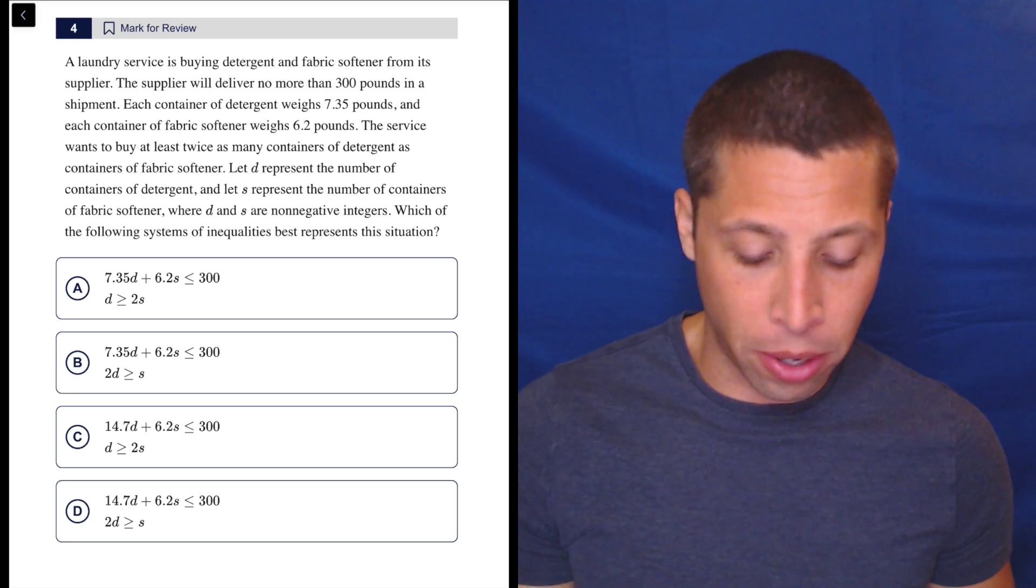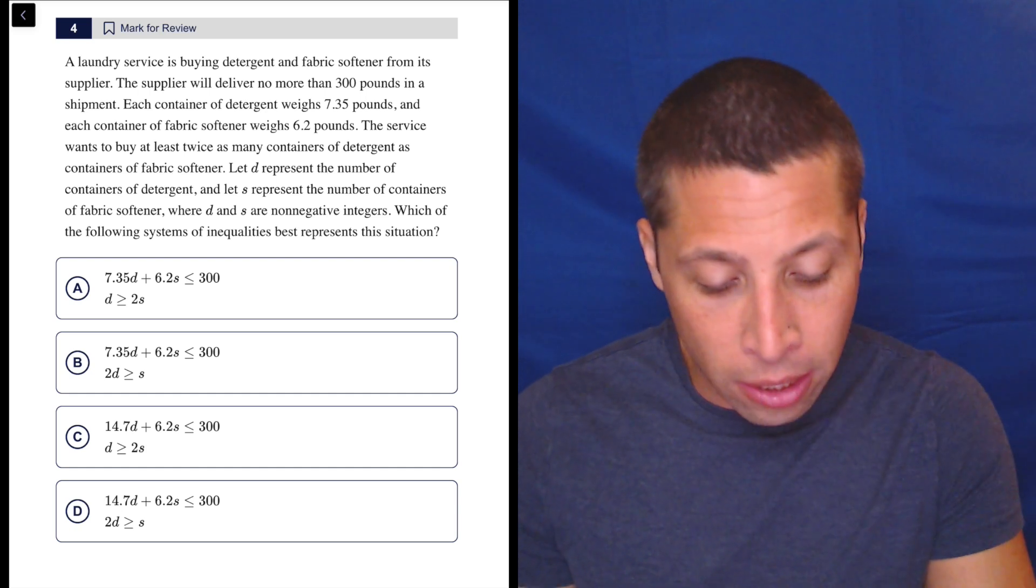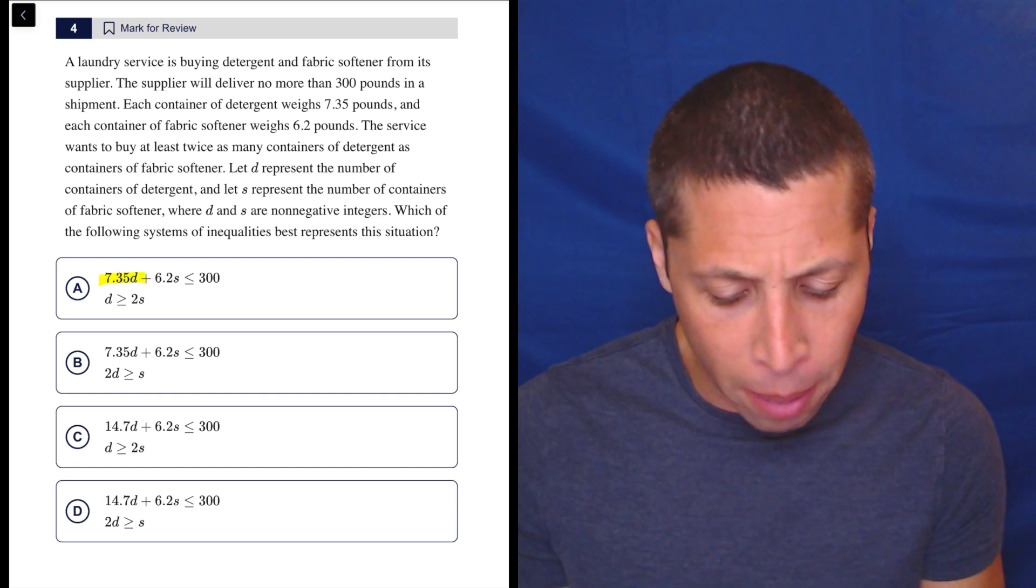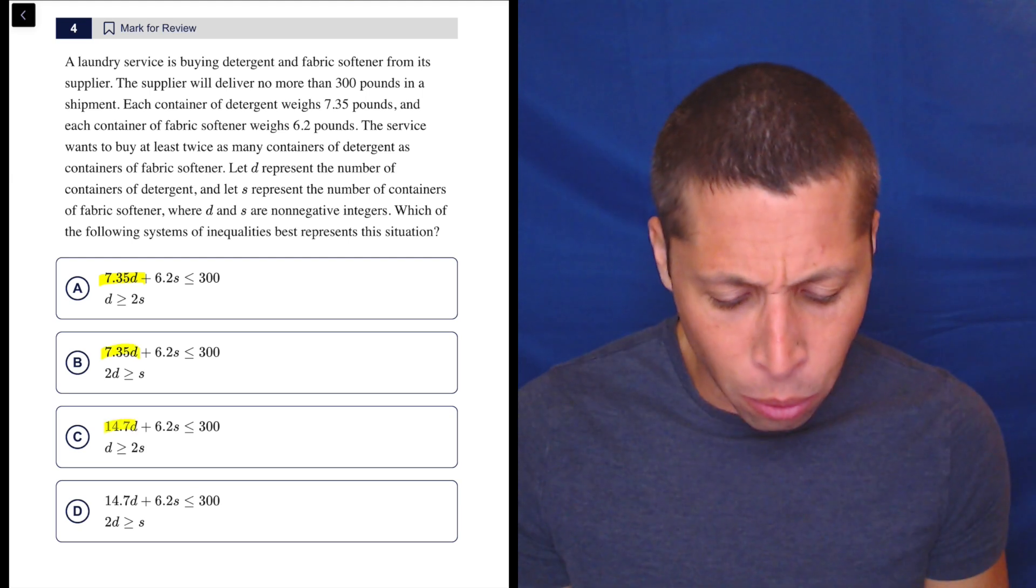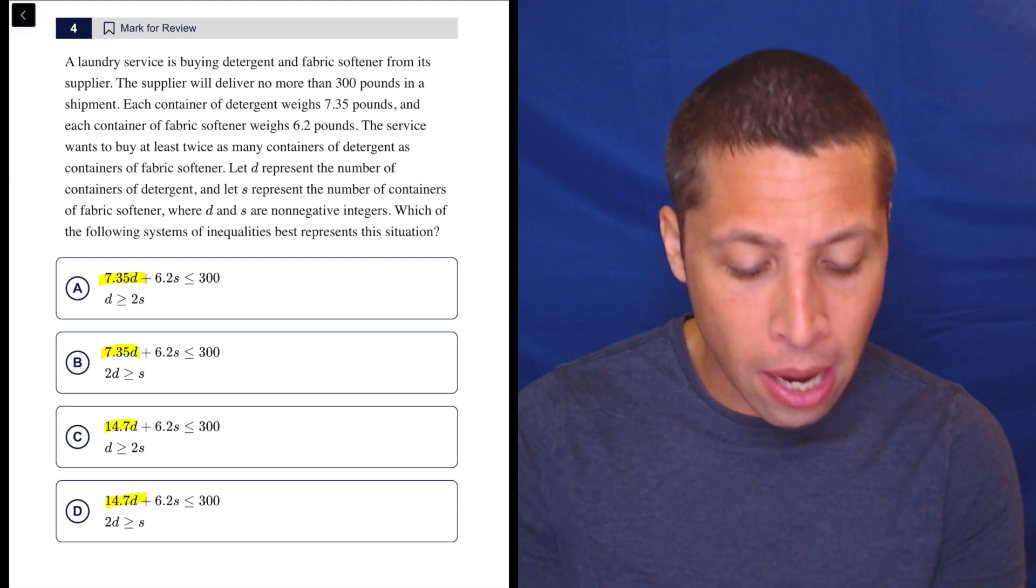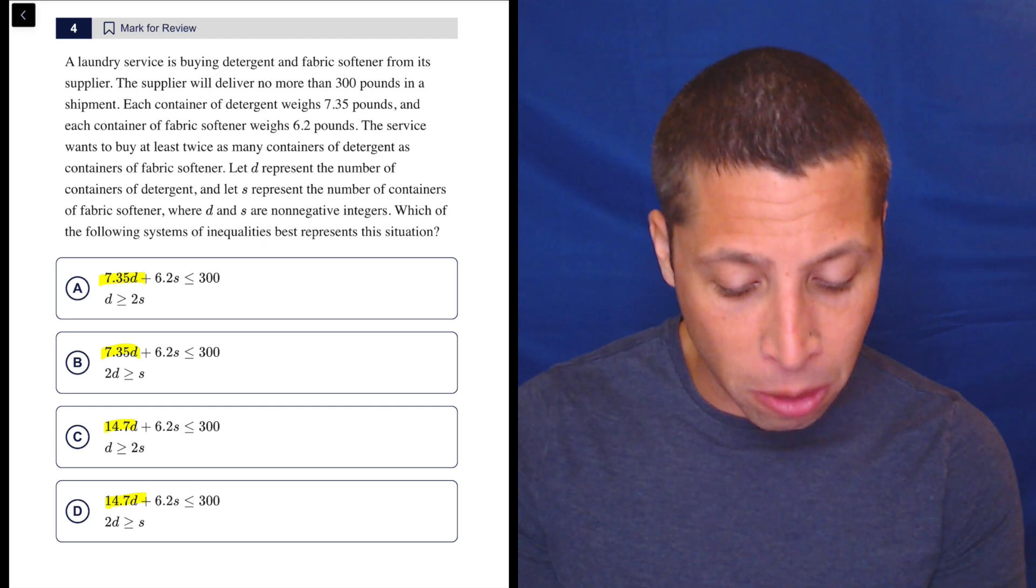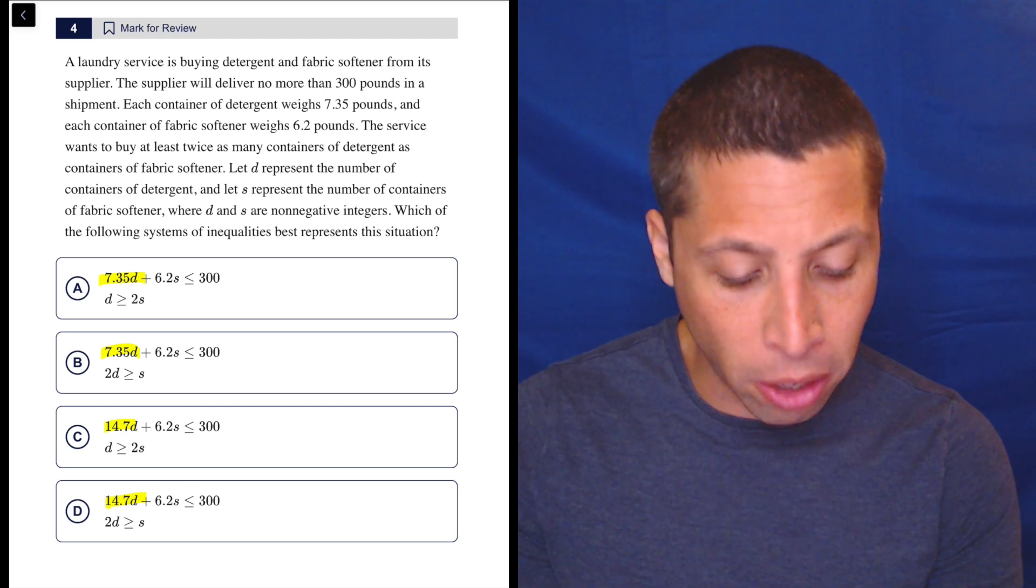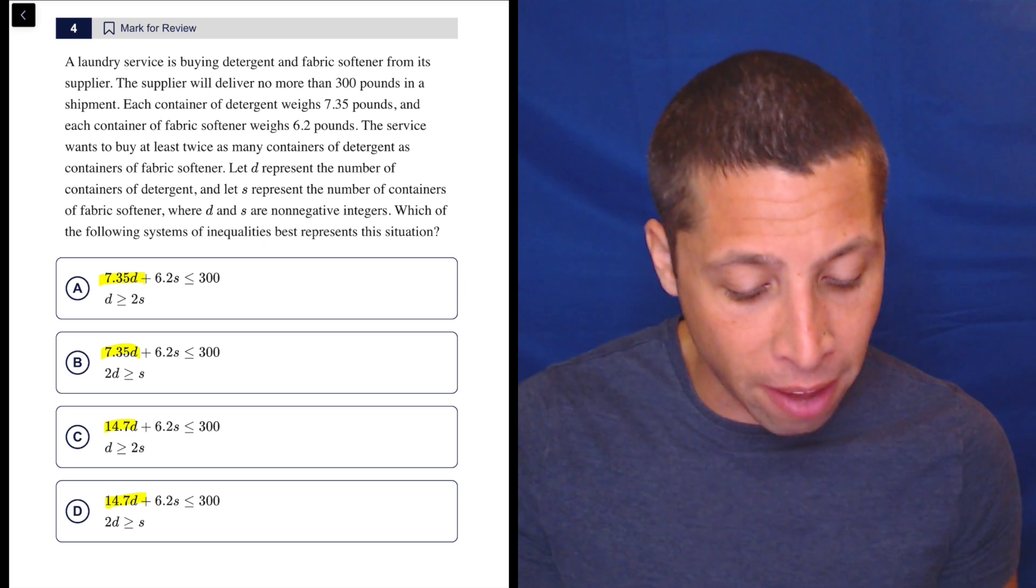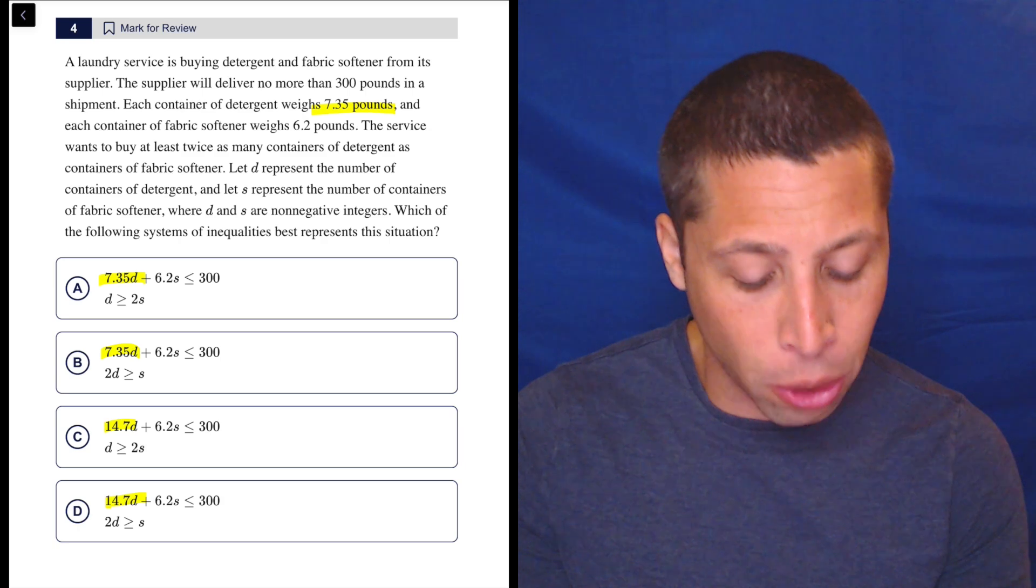So let's talk about what we're supposed to do here. There are a couple ways we can avoid the trap. The first thing is I would notice in the choices that we have this choice of does the D get multiplied by 7.35 or by 14.7? So I would try to sort that out first. Let's look at the story with that in mind. A laundry service is buying detergent and fabric softener from its supplier. The supplier will deliver no more than 300 pounds in a shipment. Each container of detergent weighs 7.35 pounds.